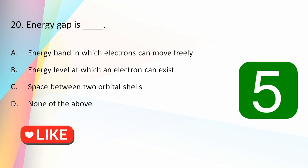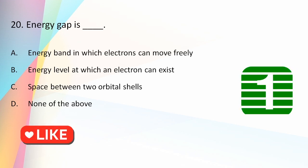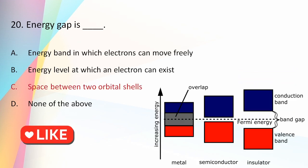The energy gap is the space between two orbital shells — specifically, the difference in energy between the bottom of the conduction band and the top of the valence band. For insulators and semiconductors the energy gap is present, but in metals the conduction band and valence band overlap each other.